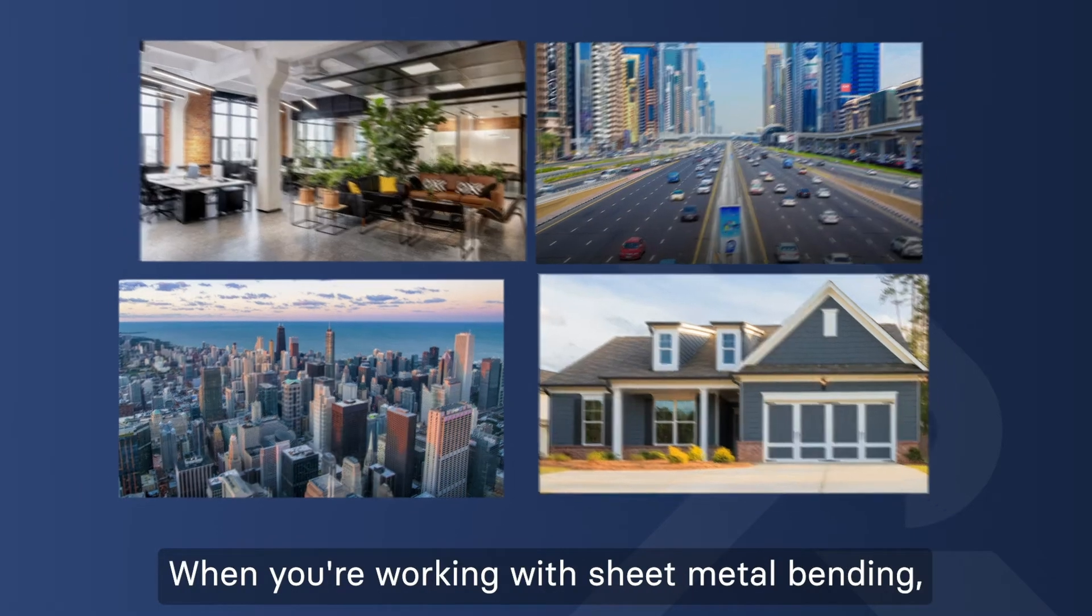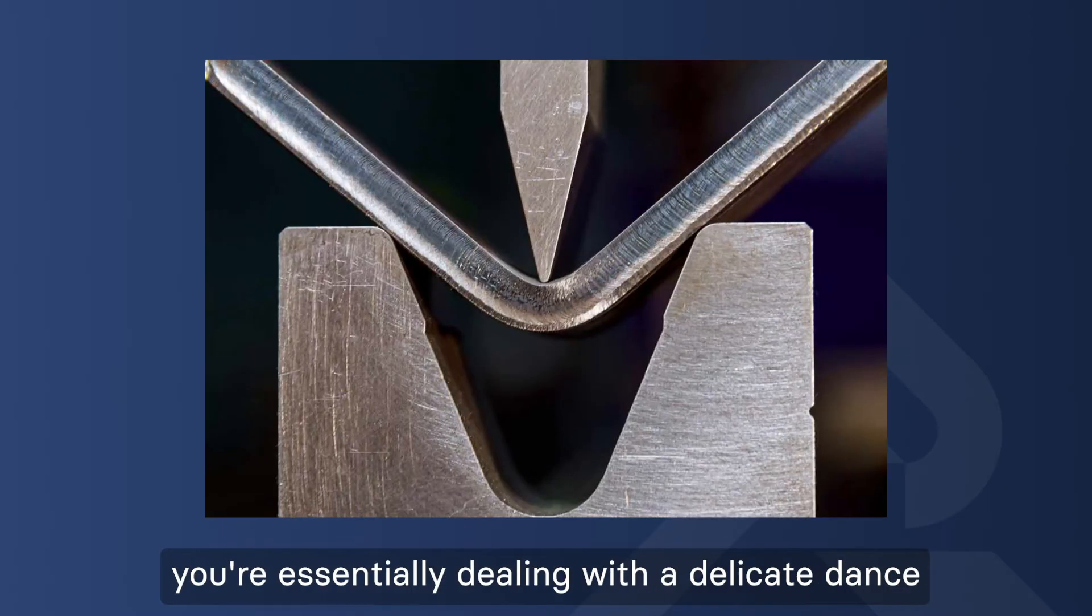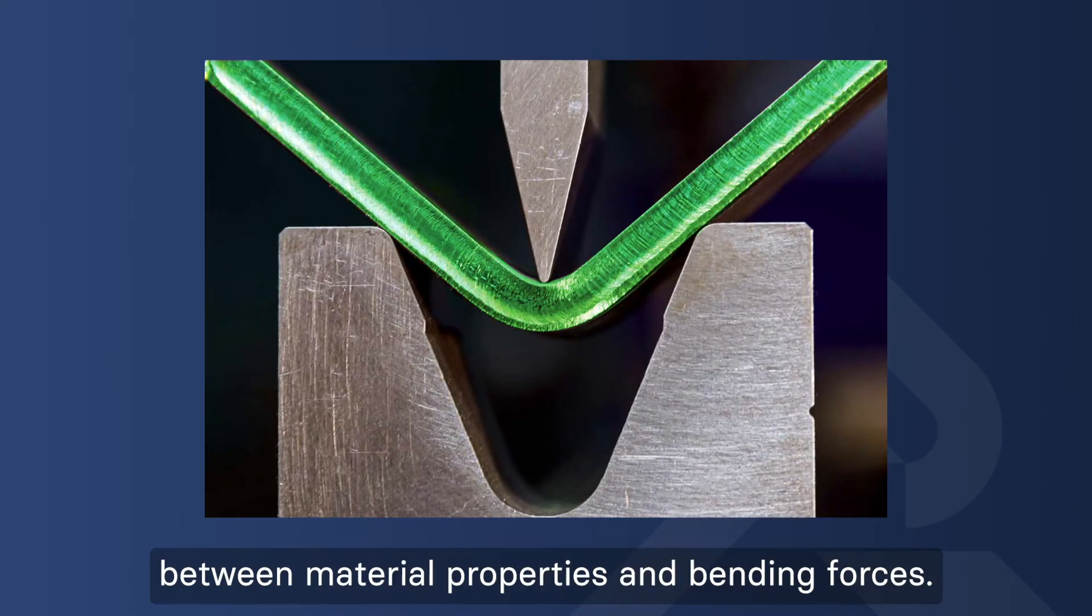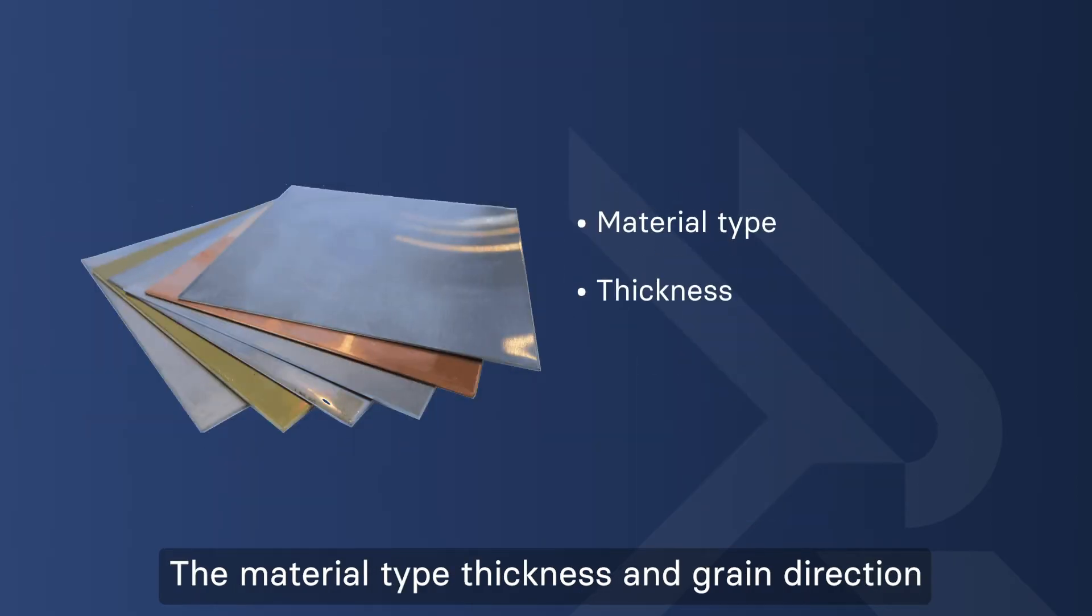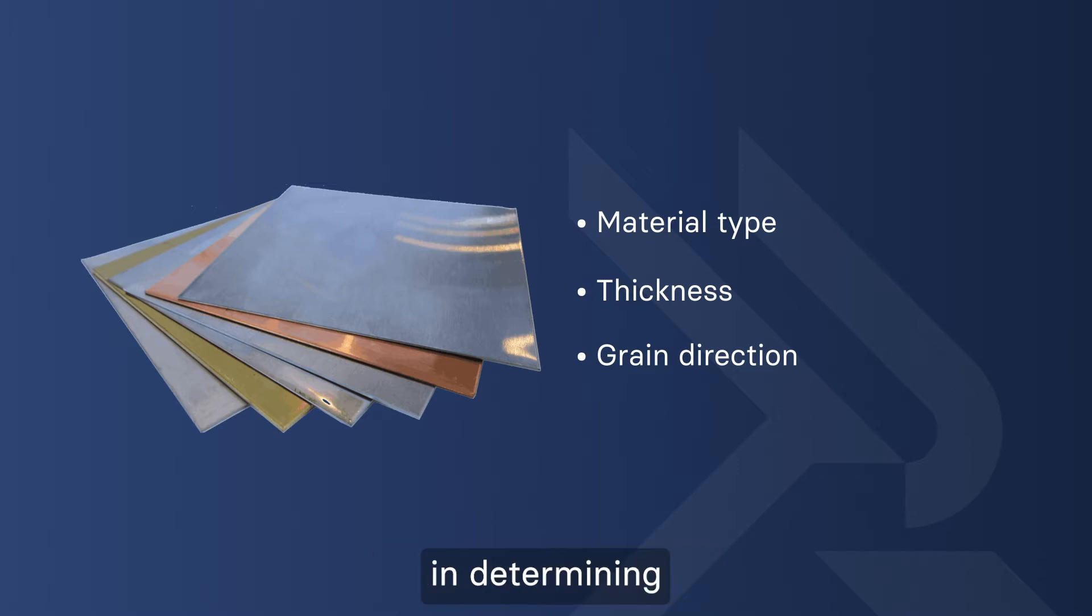When you're working with sheet metal bending, you're essentially dealing with a delicate dance between material properties and bending forces. The material type, thickness, and grain direction all play a crucial role in determining how the metal will respond to bending.